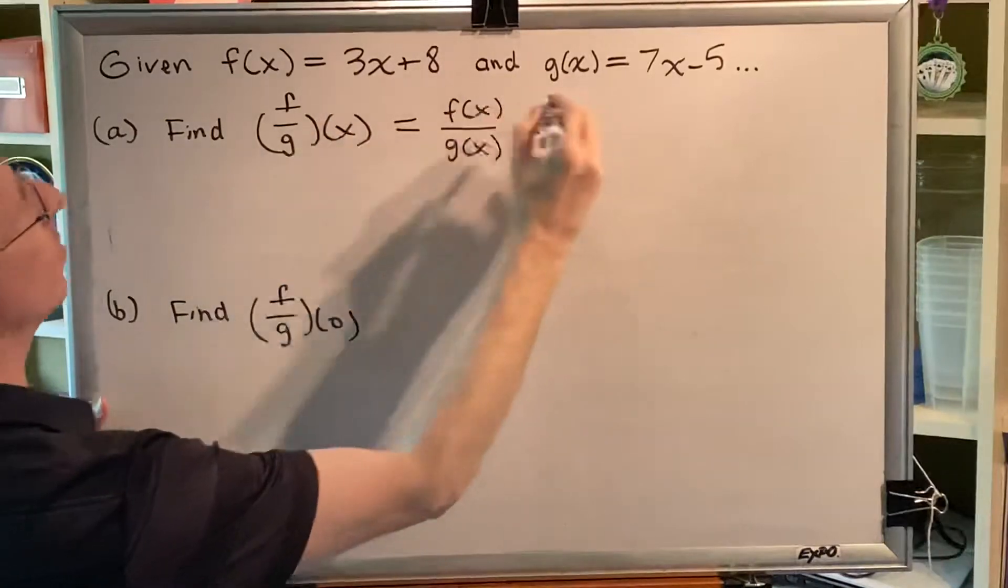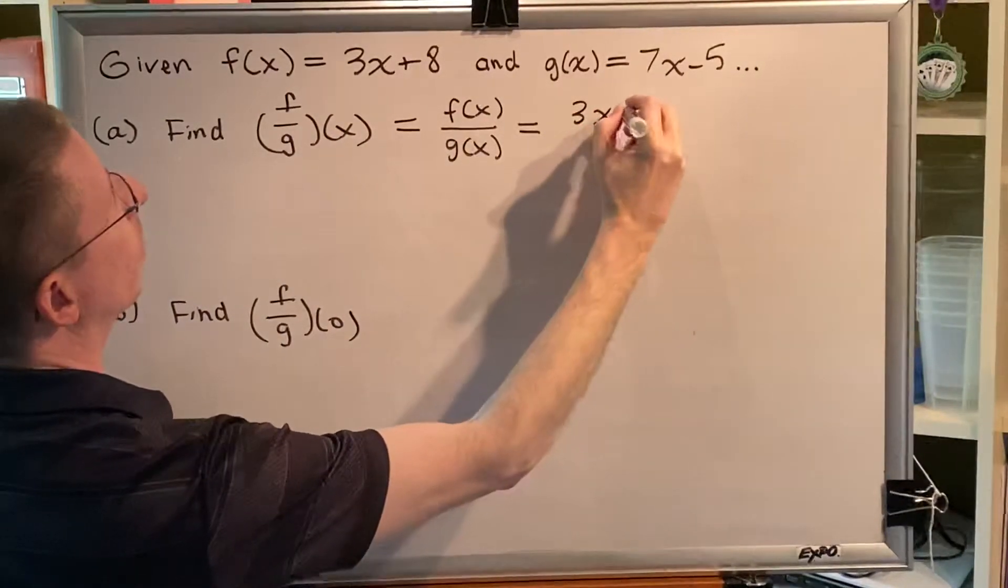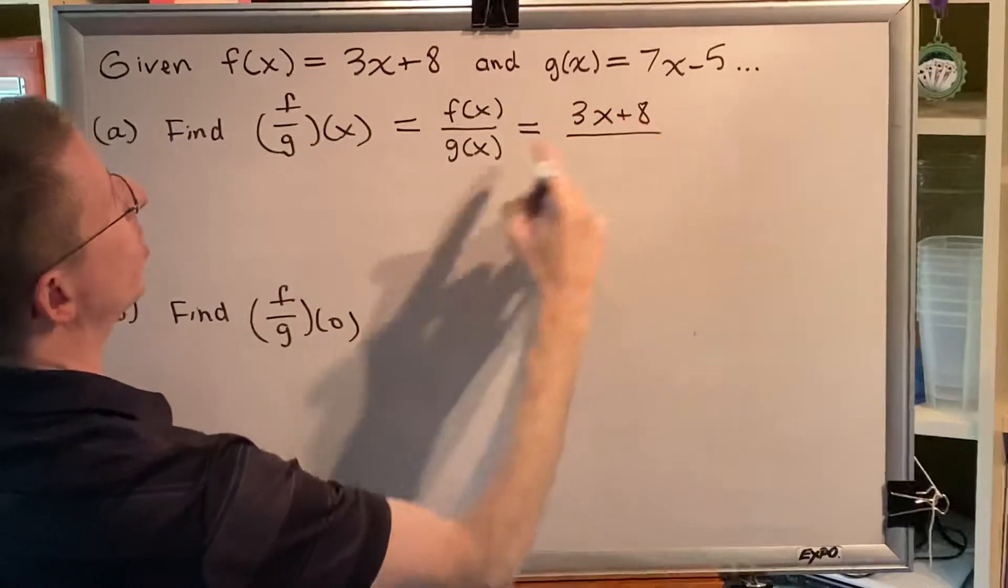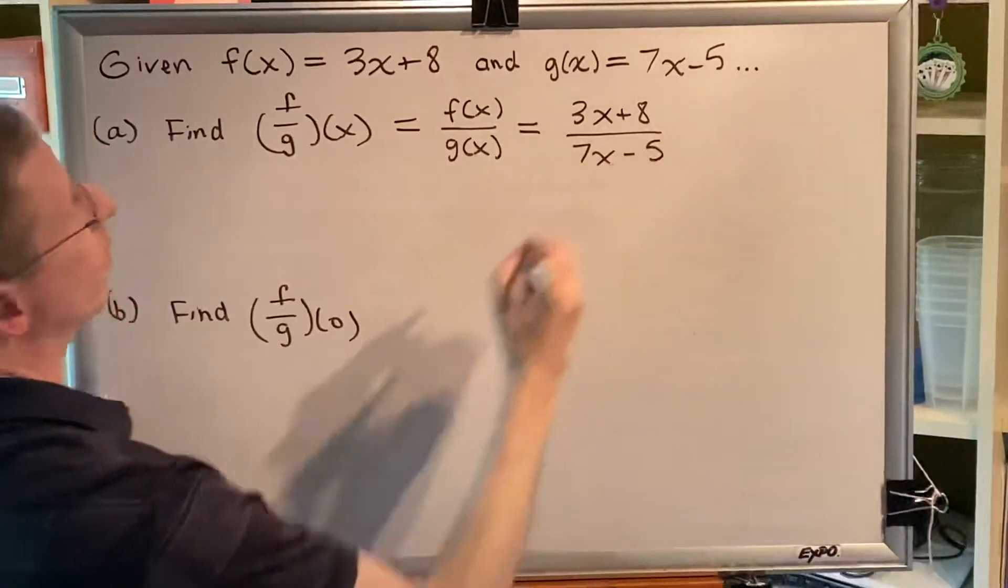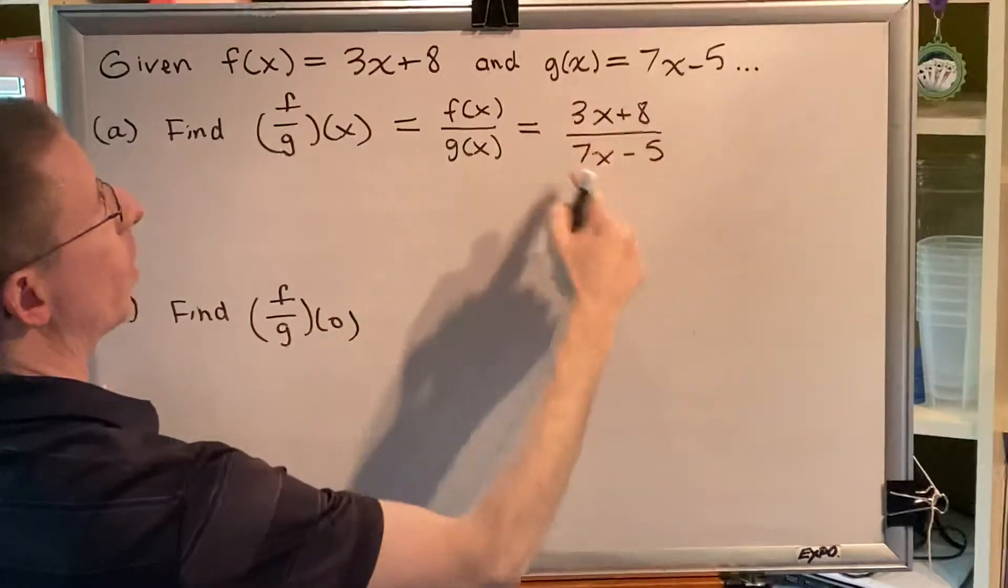Now we know what f(x) is. In this problem it's 3x + 8 and we know what g(x) is. For this problem it's 7x - 5. Now there's nothing here that can be simplified.